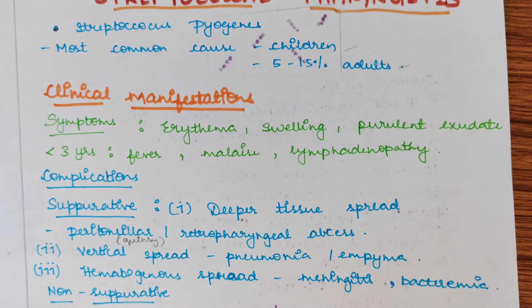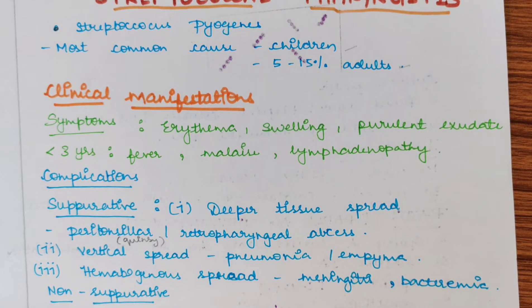In children less than 3 years, the symptoms are a little different. The symptoms include fever, malaise, and lymphadenopathy, which means enlargement of lymph nodes.